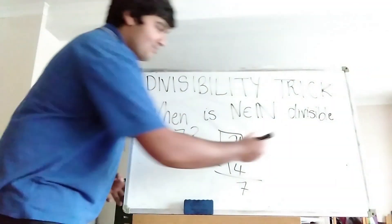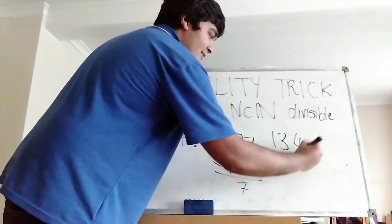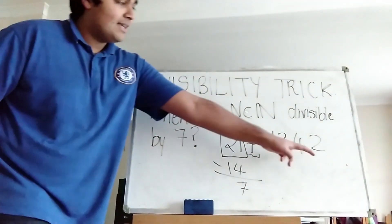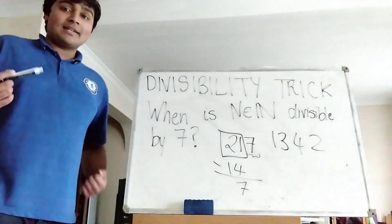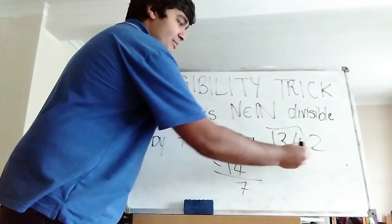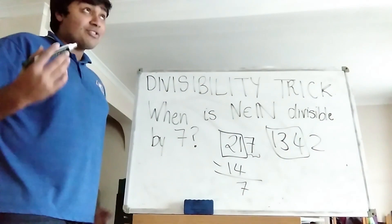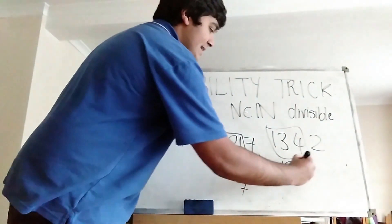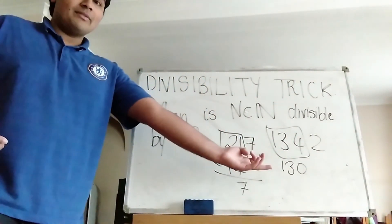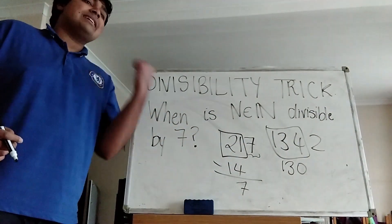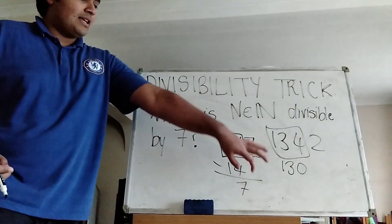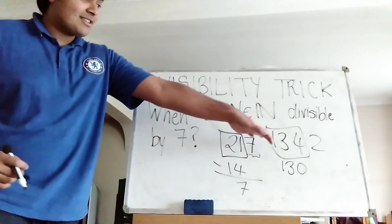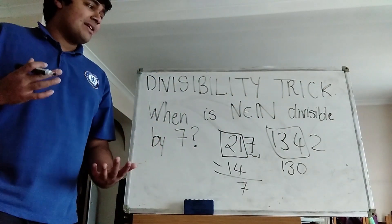Let's look at a bigger example: 1342. Let's see if this number is a multiple of 7. Double the last digit 2 to get 4, then subtract 4 from what remains: 134 minus 4 gives us 130. Now 130 isn't a multiple of 7 because 133 is a multiple of 7. So that tells us that 1342 is not a multiple of 7. That's the trick — you take the last digit, double it, and subtract it from what remains.